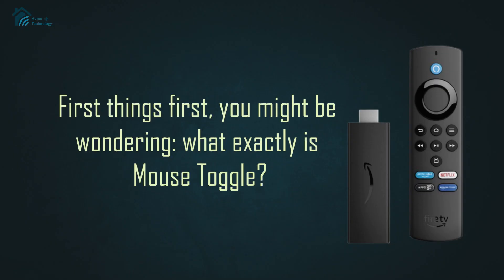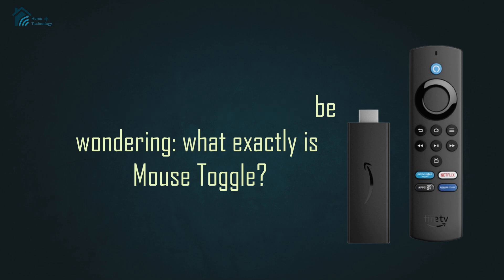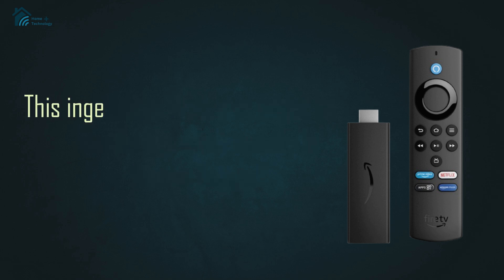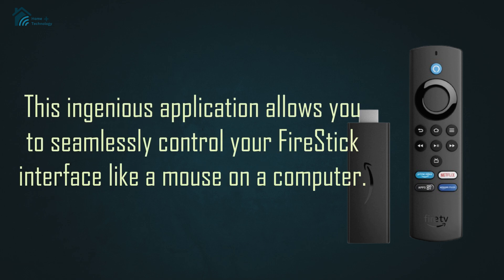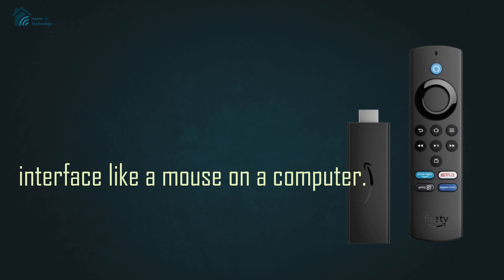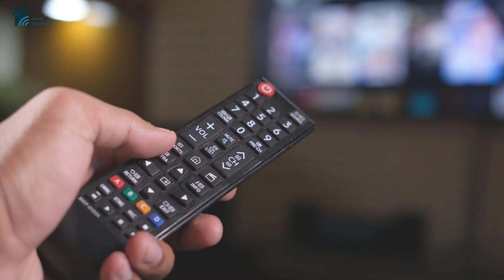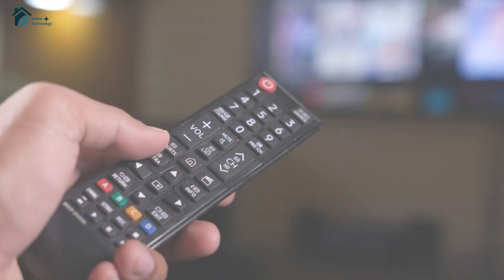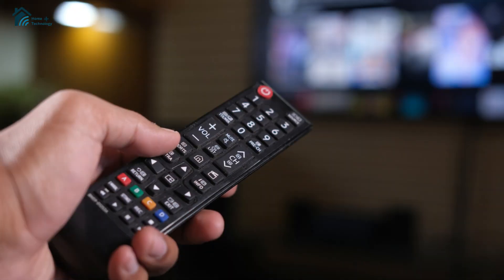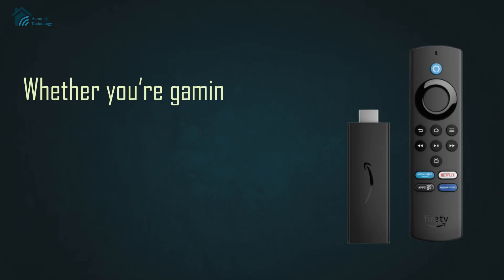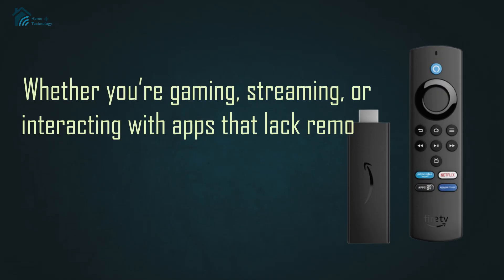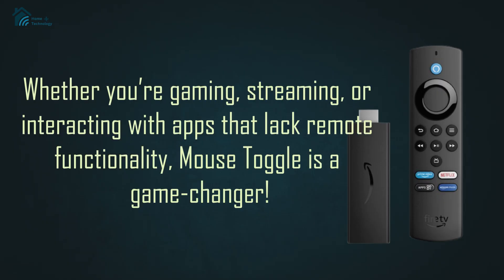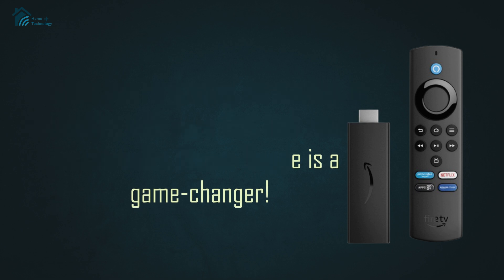First things first, you might be wondering: what exactly is mouse toggle? This ingenious application allows you to seamlessly control your Firestick interface like a mouse on a computer. By transforming your remote into a full-fledged cursor, you can click, scroll, and navigate apps with unparalleled precision. Whether you're gaming, streaming, or interacting with apps that lack remote functionality, mouse toggle is a game changer.